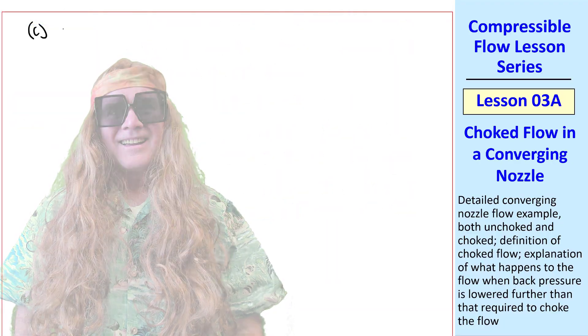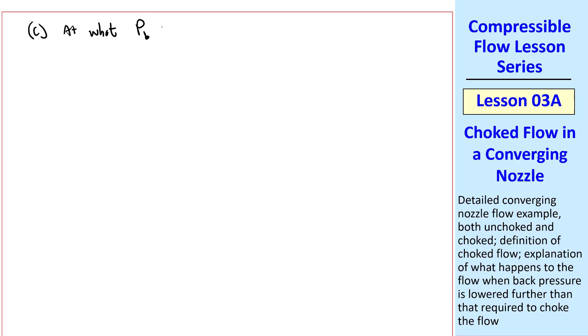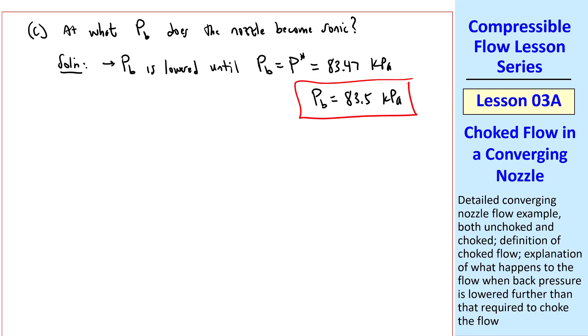Part C asks us, at what back pressure Pb does the nozzle become sonic? Well, we've really already answered this question, namely, Pb is lowered until Pb equal P-star, the critical value, which we calculated above as 83.47 kPa. Keeping with three significant digits, I would give my answer as 83.5 kPa.